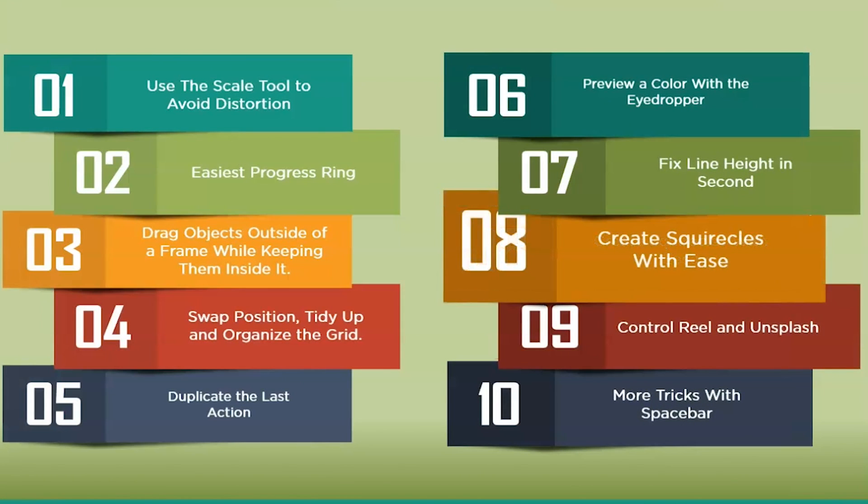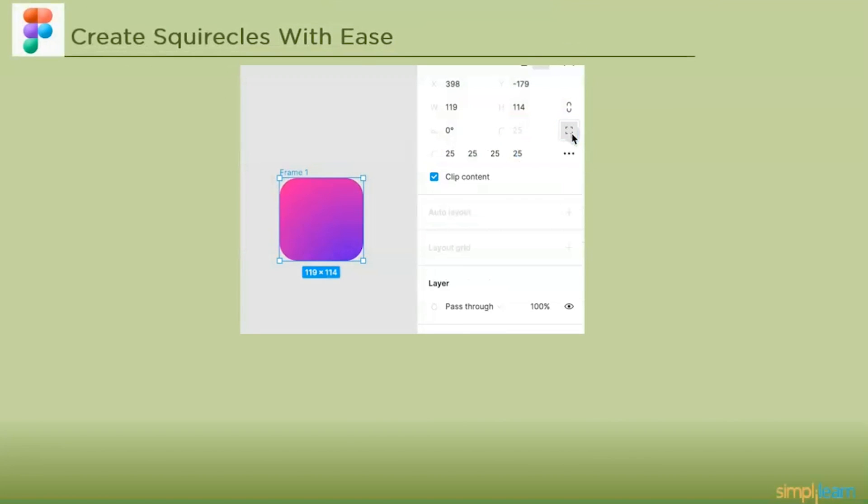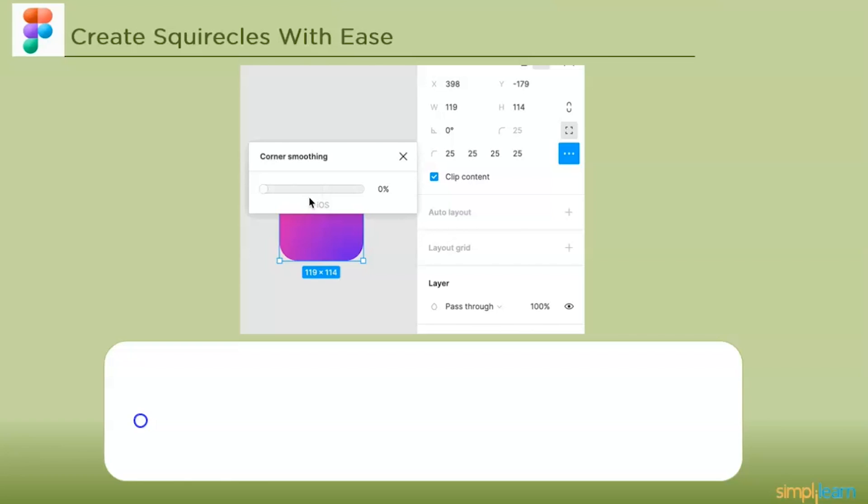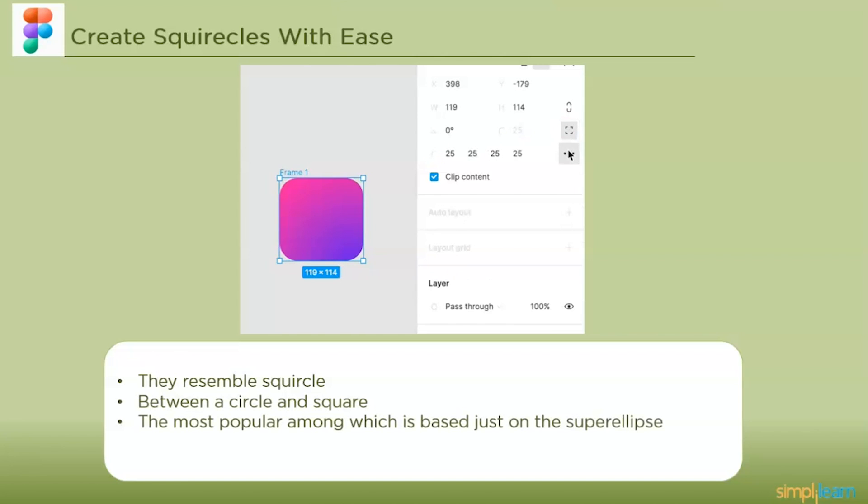The next one is creating squircles with ease. Do you know how iOS app icons are shaped? They don't resemble typical rounded rectangles. They resemble squircles. In between a square and a circle, a squircle is a form. The term squircle has at least two meanings, the most popular of which is based on the square ellipse, a combination of the terms square and circle. In UI design this kind of form is becoming more and more common. How to make a shape like this in Figma? It is incredibly easy. The squircle is in between a circle and square.